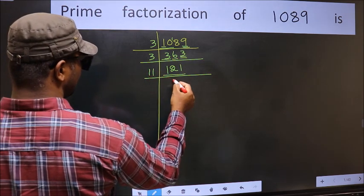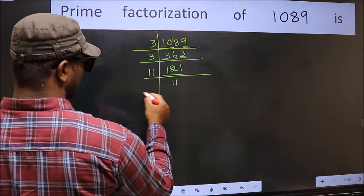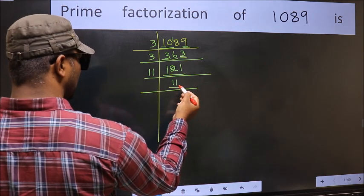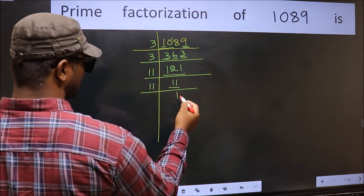Now here we have 121. Always remember 11 squared is 121, 11 into 11 is 121. That is 11 times 11 is 121. Now here we have 11. 11 is a prime number. So 11 once, 11.